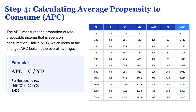So we have the number — but what does it really mean? An MPC of 0.8 translates directly into this very simple idea: if the economy as a whole gets one extra dollar, 80 cents of that dollar is going to be spent right away on goods and services. And the other 20 cents — that's what gets saved.